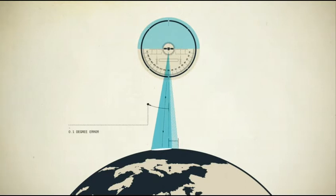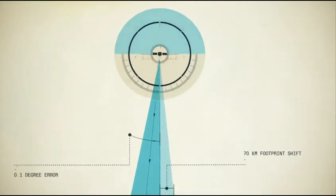Considering that a 0.1 degree error in the pointing of an antenna corresponds to a 70-kilometer shift in the footprints on Earth, the positioning of satellites is very important.